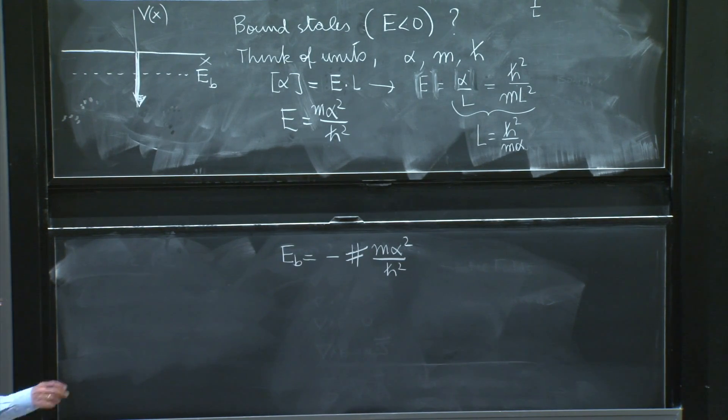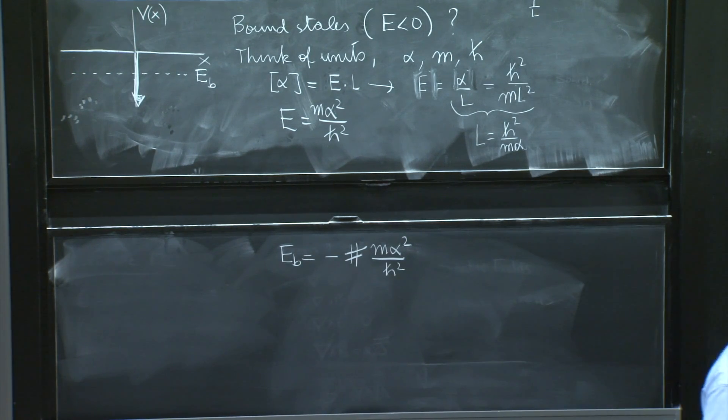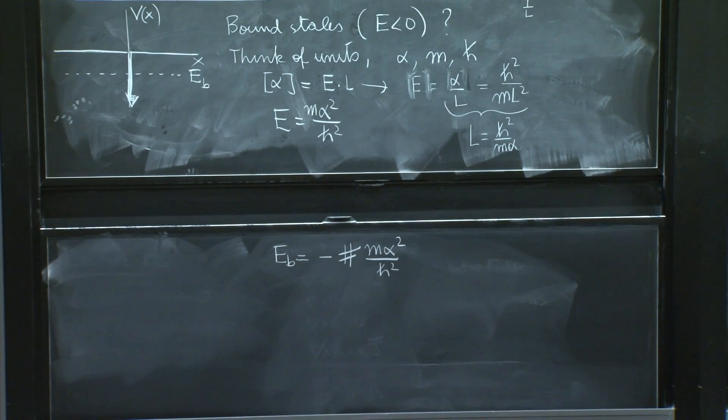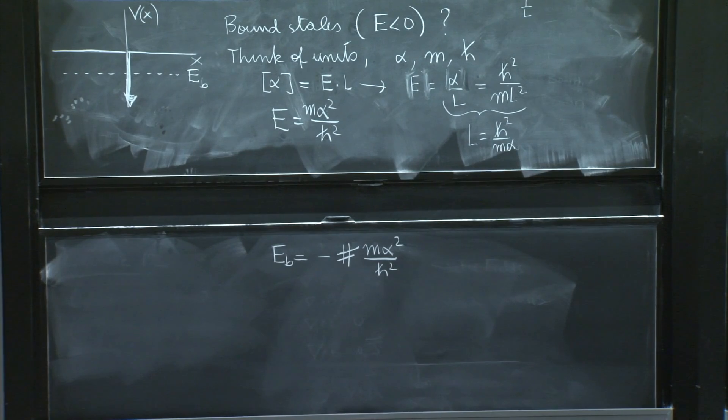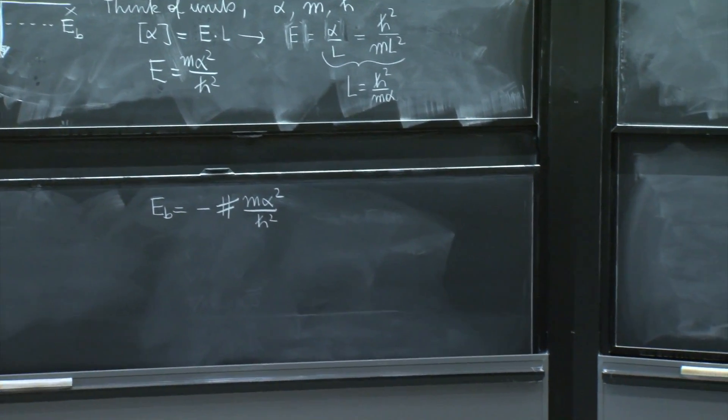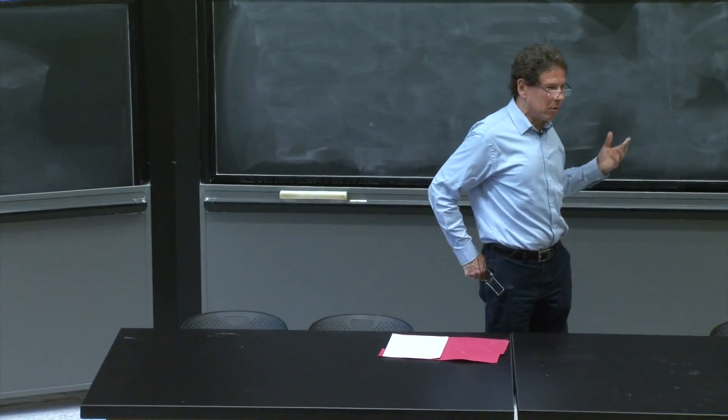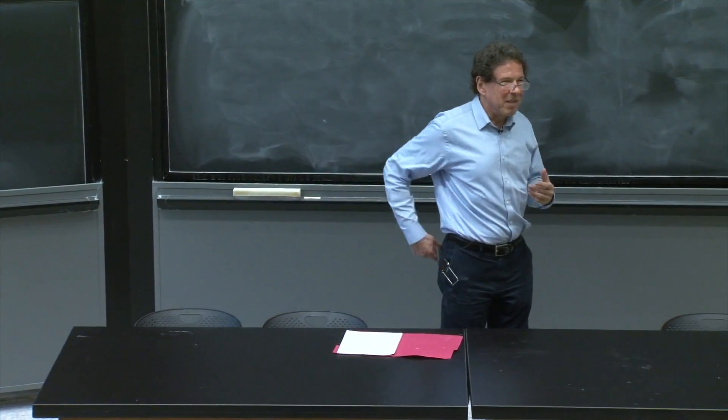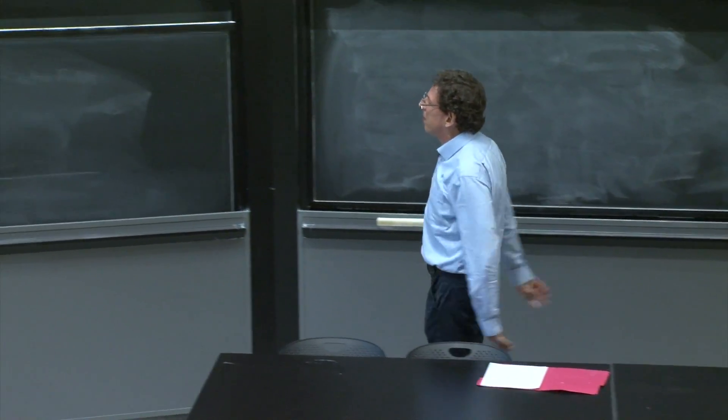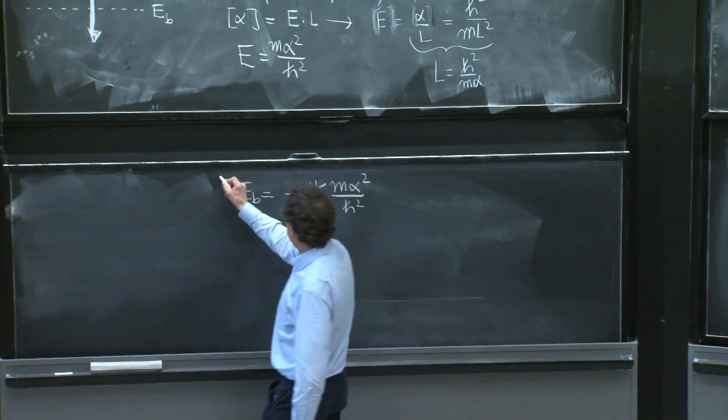And that number could be π, could be 1/3, 1/4, could be anything. There's a naturalness to that problem in that you don't expect that number to be a trillion, nor you expect that number to be 10⁻⁶. Because there's no way. Where would those numbers appear? So this number should be a number of order 1. And we're going to wait and see what it is.